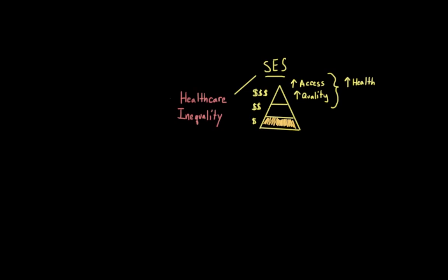First of all, high quality medical services are more likely to be located in wealthy communities as opposed to poor areas or rural areas. Disease is also more likely to spread within crowded living conditions. And substandard housing might not properly protect people from the elements.